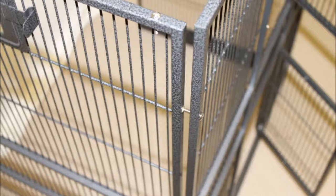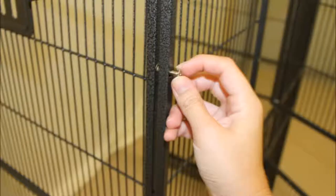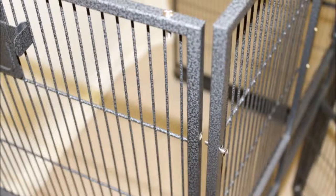Untwist the screws on the side panel, then screw them into the front panel. Do not tighten any of the screws, simply twist them in by hand until the assembly is complete.